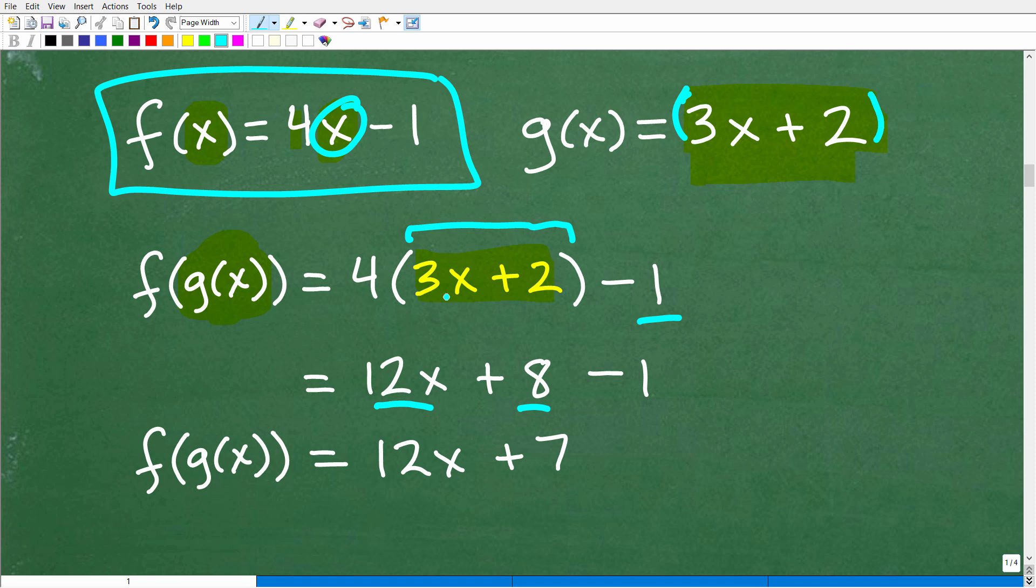Okay, so we have 4 times 3x, 12x, 4 times 2, 8 minus 1. And when we clean this up, we get f of g of x is equal to 12x plus 7.